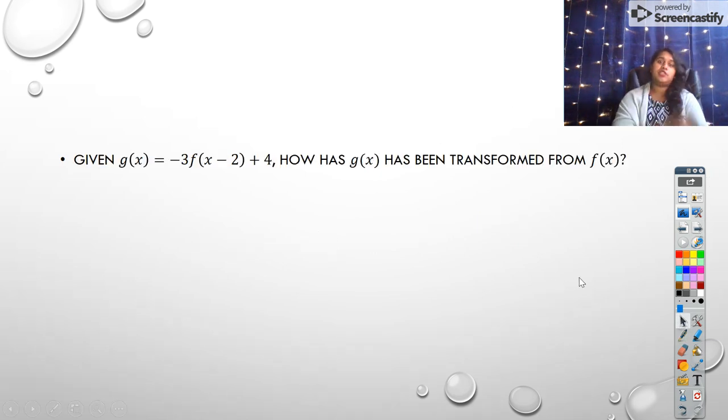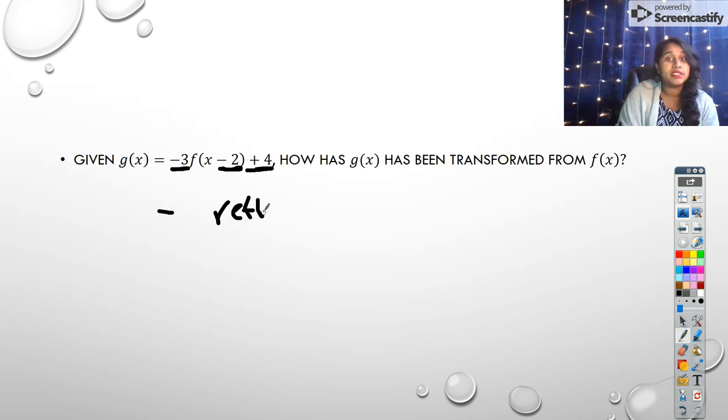Okay. Given this function, how has this been transformed? So I look at the key information. What's my key information? This right here. This is key information. This is key information. And this is right here. So the negative tells me I reflected, doesn't it? But specifically where? I reflected over the x-axis.